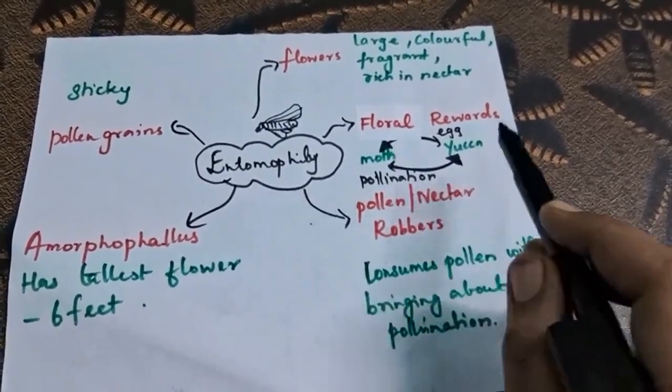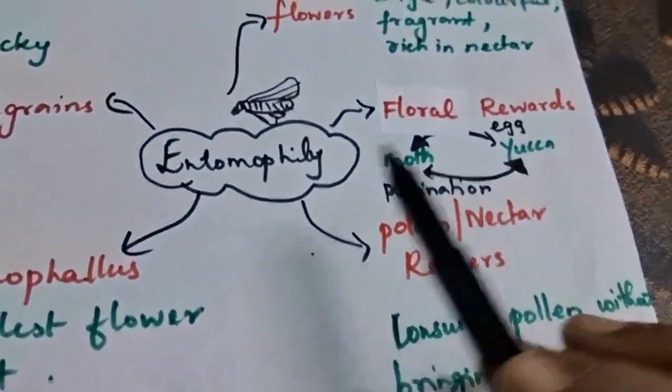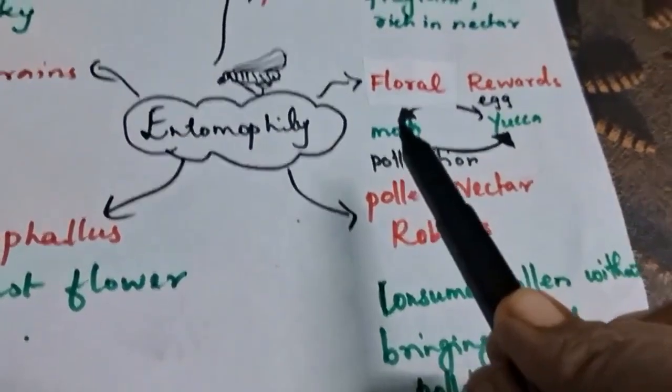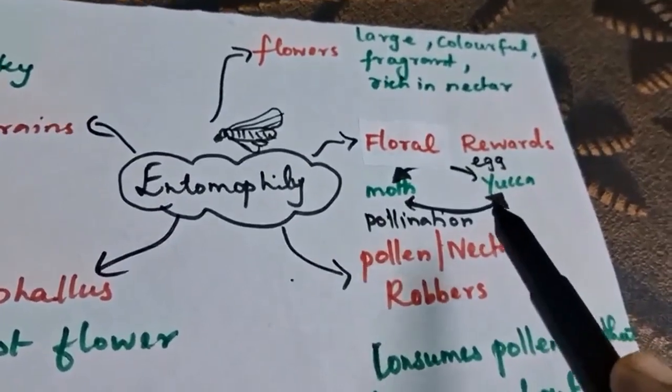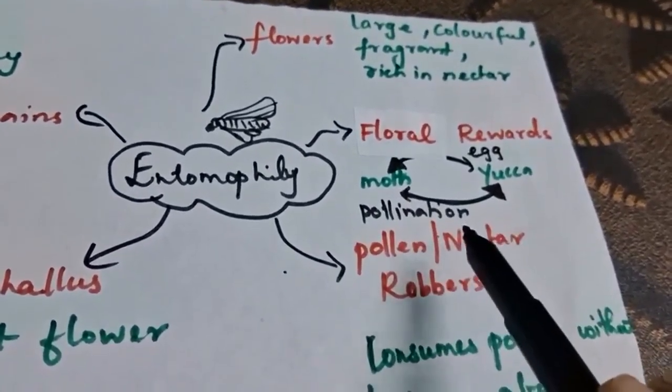This floral pollination is explained with moth and yucca. Moth is a kind of insect and yucca is a type of flower. The moth lays eggs on the yucca plant, whereas the moth helps by pollinating the flowers.